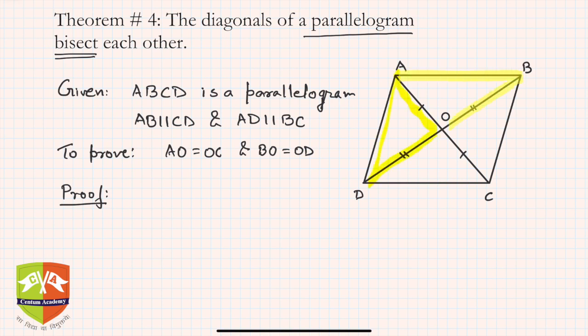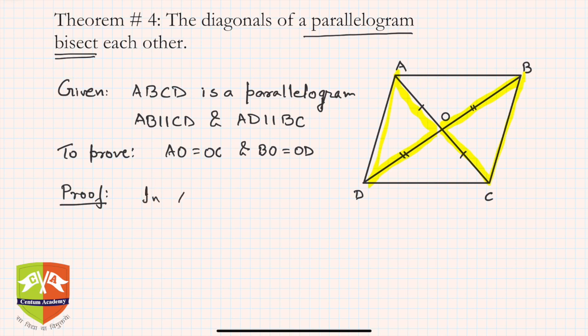One choice is triangles AOD and COB. If we take AOD and another pair, the problem is OC is not involved, so it would be difficult. But if we choose triangles AOD and COB, all the components to be proved are involved. In triangle AOD and triangle COB, the correspondence is achieved properly.